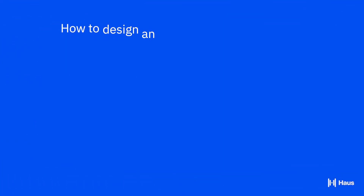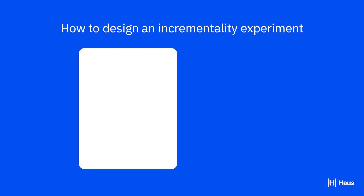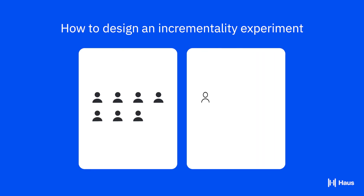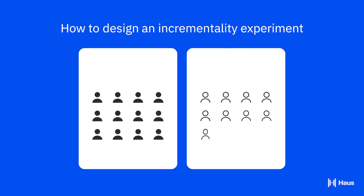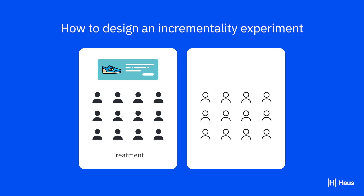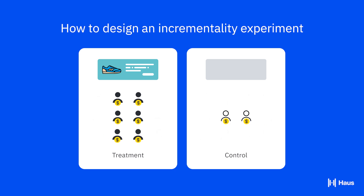Here's how it works. Divide your audience into two groups. One group of people is exposed to the ad — that's the treatment group. And one group of people isn't exposed — that's the control group. Then we compare the purchase behavior across both groups. The difference shows the incremental value of the ads.